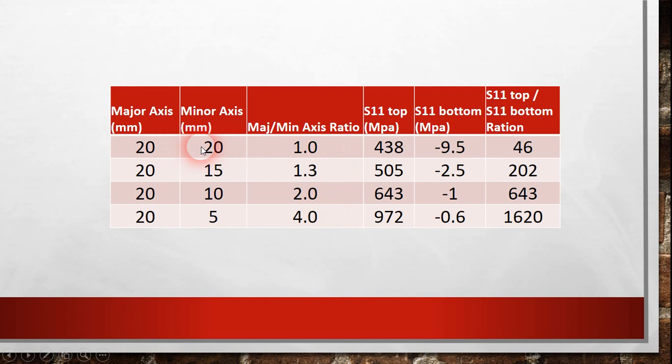In our first case, when it was a circle, the stress in x direction at the top was 438, which is a tension, while at the bottom it was minus 9.5 megapascals, or 9.5 megapascals in compression. So if you try to find the stress in x direction at the top and divide it by the stress in x direction at the bottom, you will find that this ratio is 46.